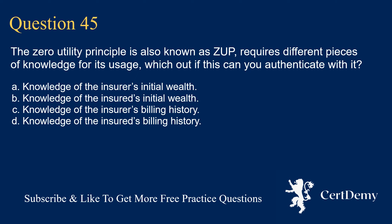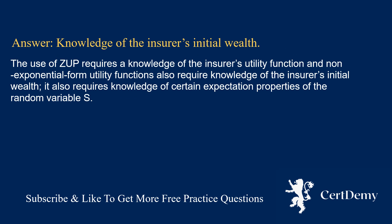Question 45. The zero utility principle (ZUP) requires different pieces of knowledge for its usage. Which can you authenticate? Options: knowledge of the insurer's initial wealth; knowledge of the insurer's billing history. The answer is: knowledge of the insurer's initial wealth. The use of ZUP requires knowledge of the insurer's utility function, and non-exponential form utility functions also require knowledge of the insurer's initial wealth, as well as knowledge of certain expectation properties of the random variable S.